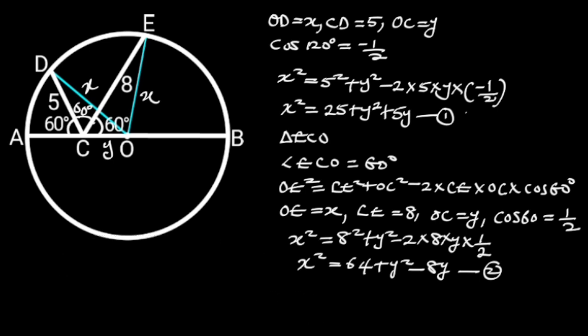Going further, let's observe that the left side of equation 1 and 2 are equal. Therefore, we can say that 25 plus Y squared plus 5Y is equal to 64 plus Y squared minus 8Y.